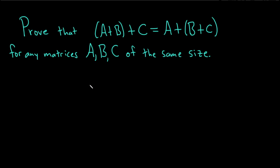In this problem, we're going to prove that matrix addition is associative. So we're going to prove that (A+B)+C is the same as A+(B+C). And this is for any matrices A, B, C of the same size. Proof.